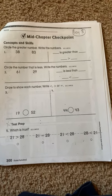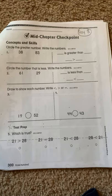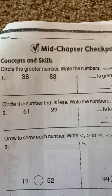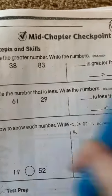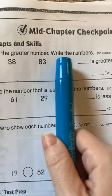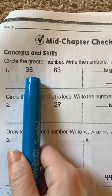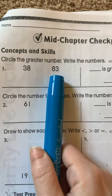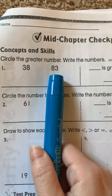Today we are going to circle the greater number and write the numbers, okay? So let's look at number one. I will do it to give you an example. You have to circle the greater number, write the numbers. So we have the numbers 38 and 83. We need to know which number is greater, which one number is bigger.